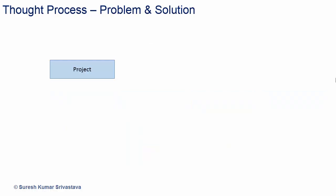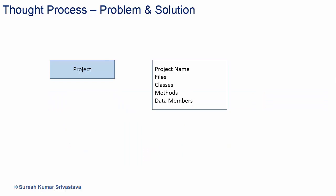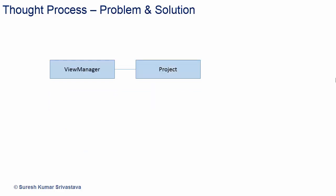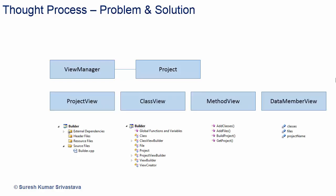We require a project object and the project will have different parts like project name, files, classes, methods, and data members. We can have a view manager which creates the project. But the project has multiple parts and different views of the project require different representations. Like project view will require project name and files, and class view will require project name and classes, and so on for others.